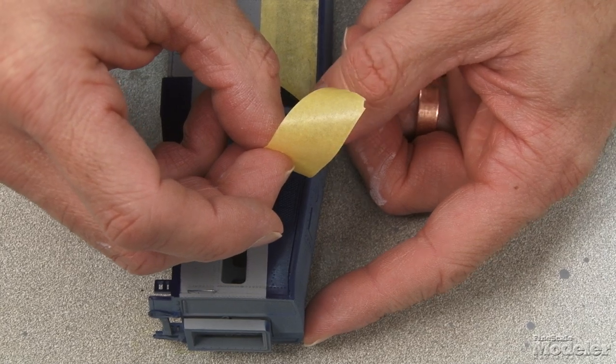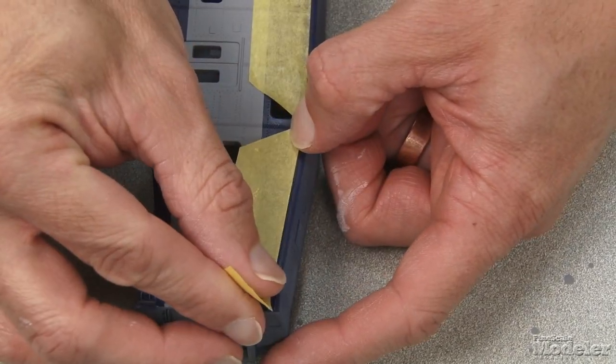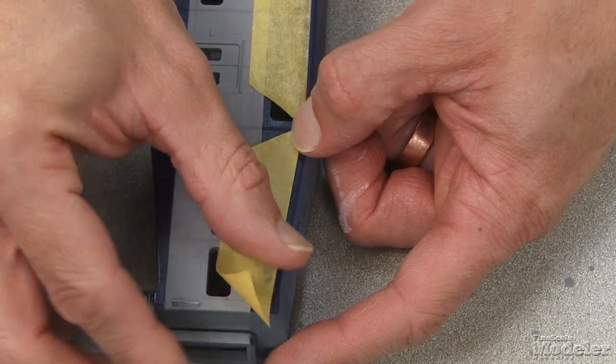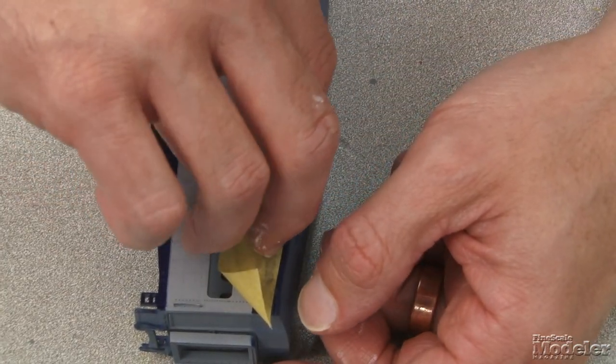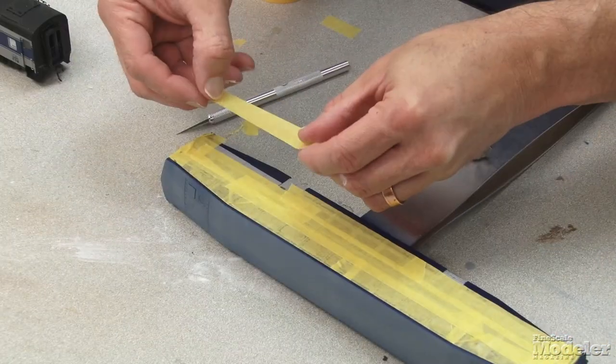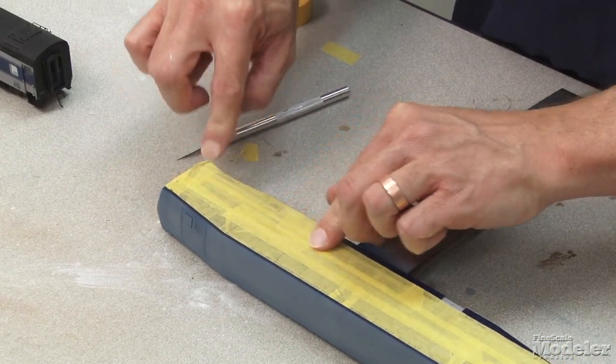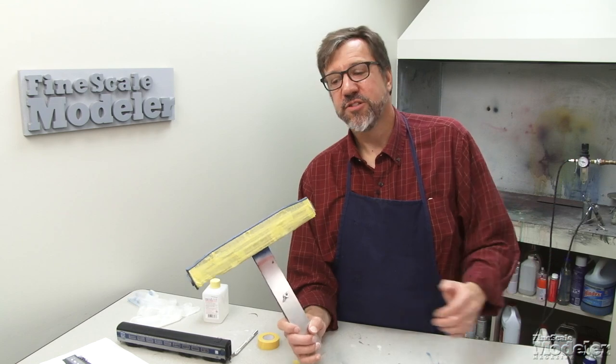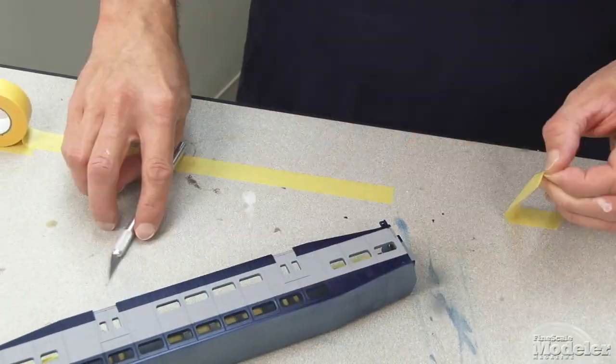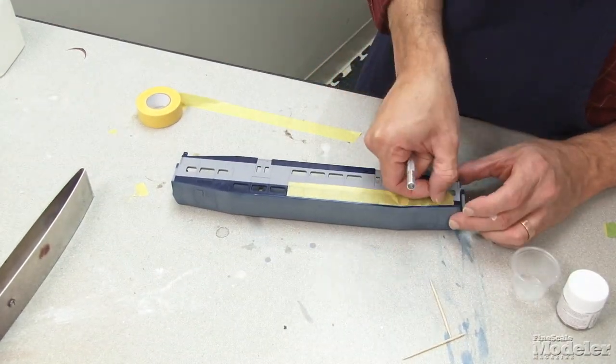All masking is time consuming if you want to do it right and it's worth doing it right the first time so you don't have to do a lot of correction work later or risk ruining a model that you spend a lot of time building with a bad paint job. So that's the one side masked. I still have to do the other side. Let's do that and then we'll get into the spray booth.